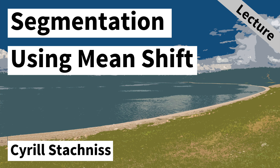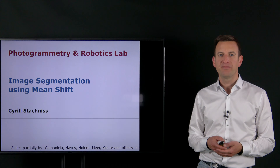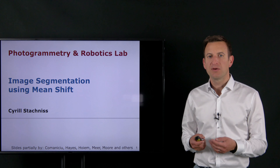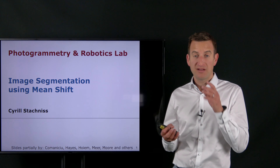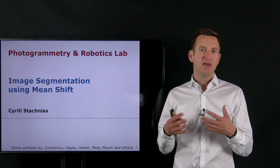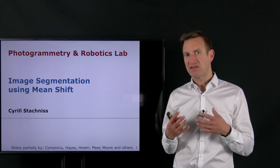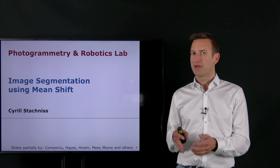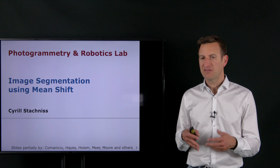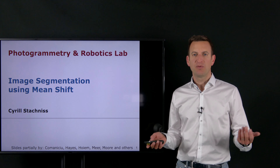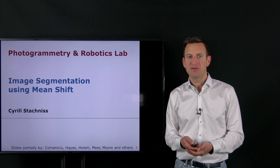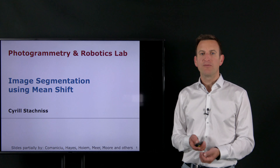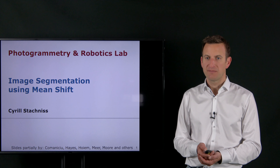Today I want to briefly look into image segmentation using the so-called mean shift algorithm. We want to dive a little bit into the details on how we can basically segment similar regions in an image as belonging together.